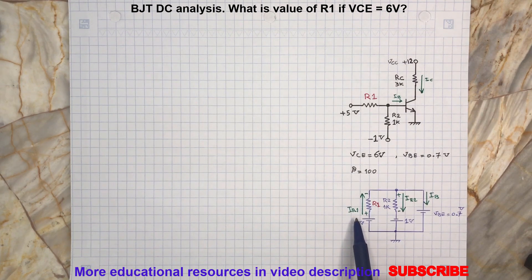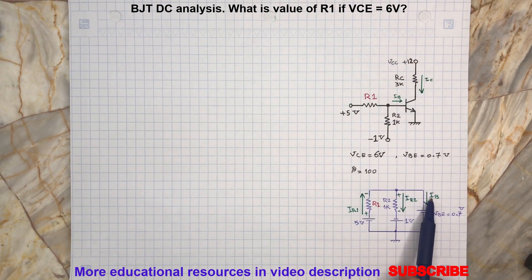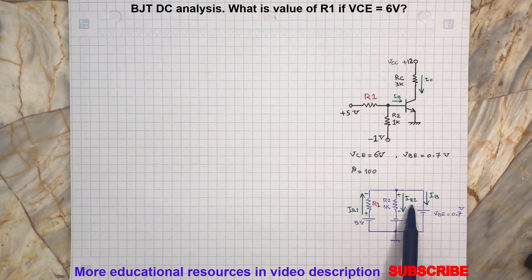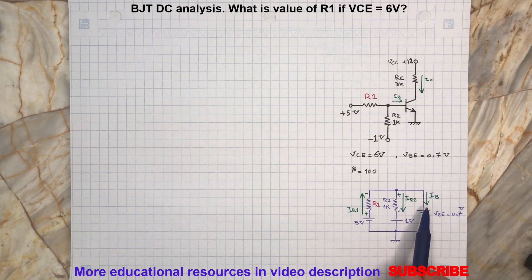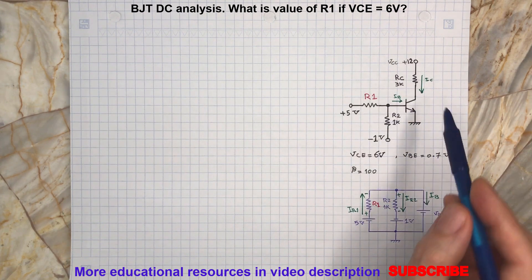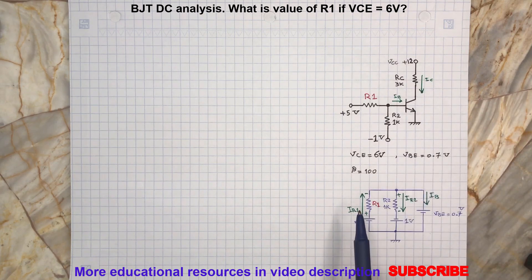So to find IR1 we will need to calculate IB and also IR2. So let's start with IB. IB is the base current. To find the base current we need to find the current flowing through the collector of this transistor.